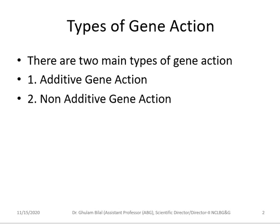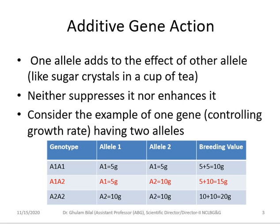To understand heritability, we need to know the types of gene action. There are two main types: additive gene action and non-additive gene action. Additive gene action is where one allele adds to the effect of the other allele — like sugar crystals in a cup of tea; the more crystals you add, the sweeter the tea becomes.